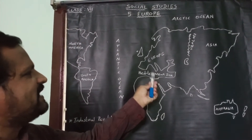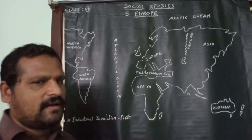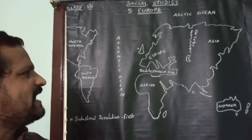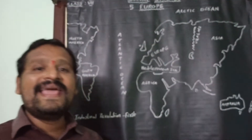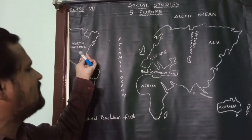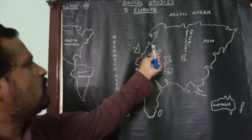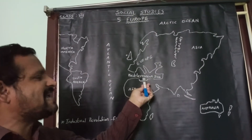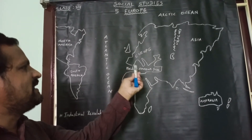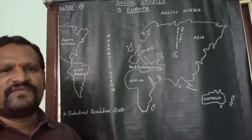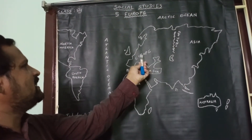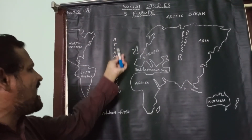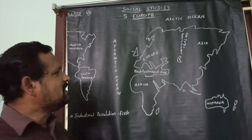Europe continent is bordered by the Mediterranean Sea on the south. What is the meaning of the Mediterranean Sea? It means the sea is in the middle of the world. In ancient times, Europeans didn't know about North America and Australia — they knew only Europe, western parts of Asia, and northern parts of Africa, so they believed this sea was in the center of the world. That is why the Europeans named it the Mediterranean Sea. Europe continent is also bordered by the Atlantic Ocean on the west.